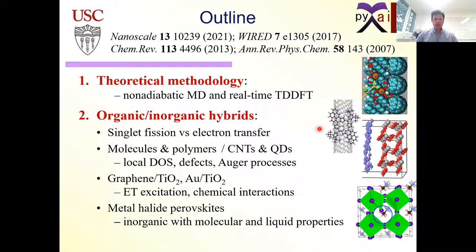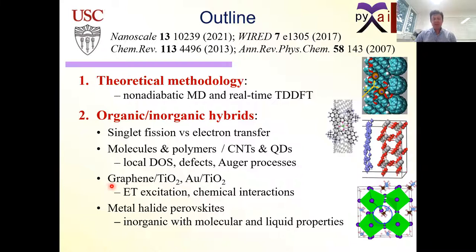Then I'll switch to hybrid materials where we have organic polymers or molecules with inorganic quantum dots or carbon nanotubes. It's quite interesting what happens if you put organic and inorganic matter next to each other. In molecules you have singlet fission, in quantum dots you have multiple excitons. I'll also briefly discuss materials like graphene, which have no gap, yet people can still use graphene as a light harvester and inject electrons into CO2, and similar questions arise for plasmonic materials.